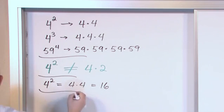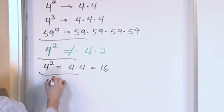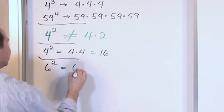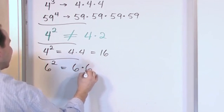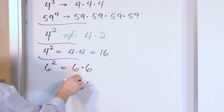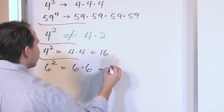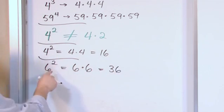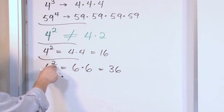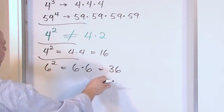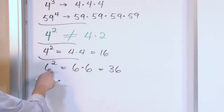Let's do another one. Let's say we have 6 squared. What would that be equal to? That would be 6 multiplied by itself 2 times because that's the number here. 6 times 6 is going to give us 36. You can see right away that 6 times 2, if you just did that, would be 12. That's nothing even close to 36. So just forget about multiplying these.